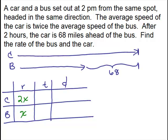What about the time? They leave at the same time. And it says after two hours, we've got this situation. So they both are traveling for a total of two hours. Since rate times time equals distance, the car's distance must be 2x times 2 or 4x. And the bus's distance must be x times 2 or 2x.